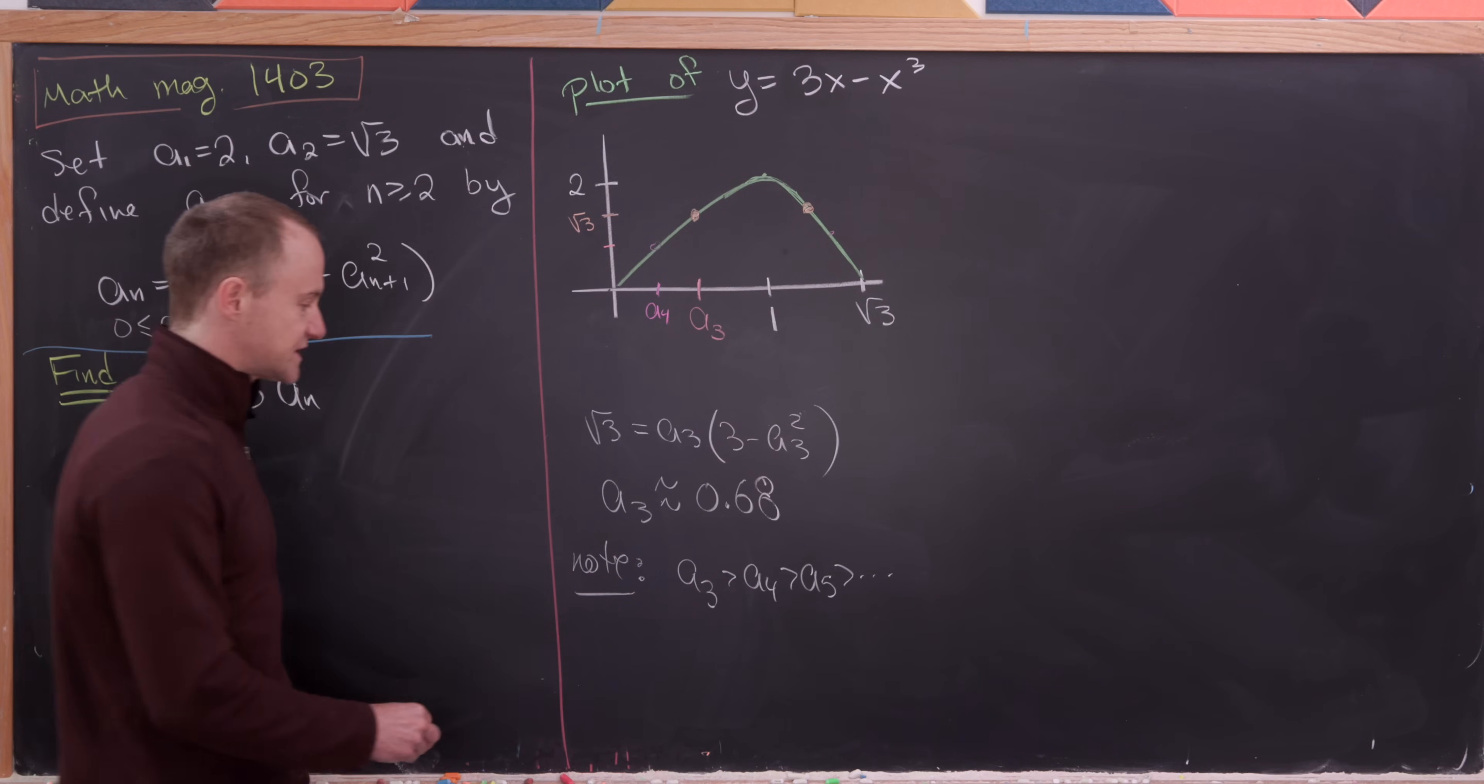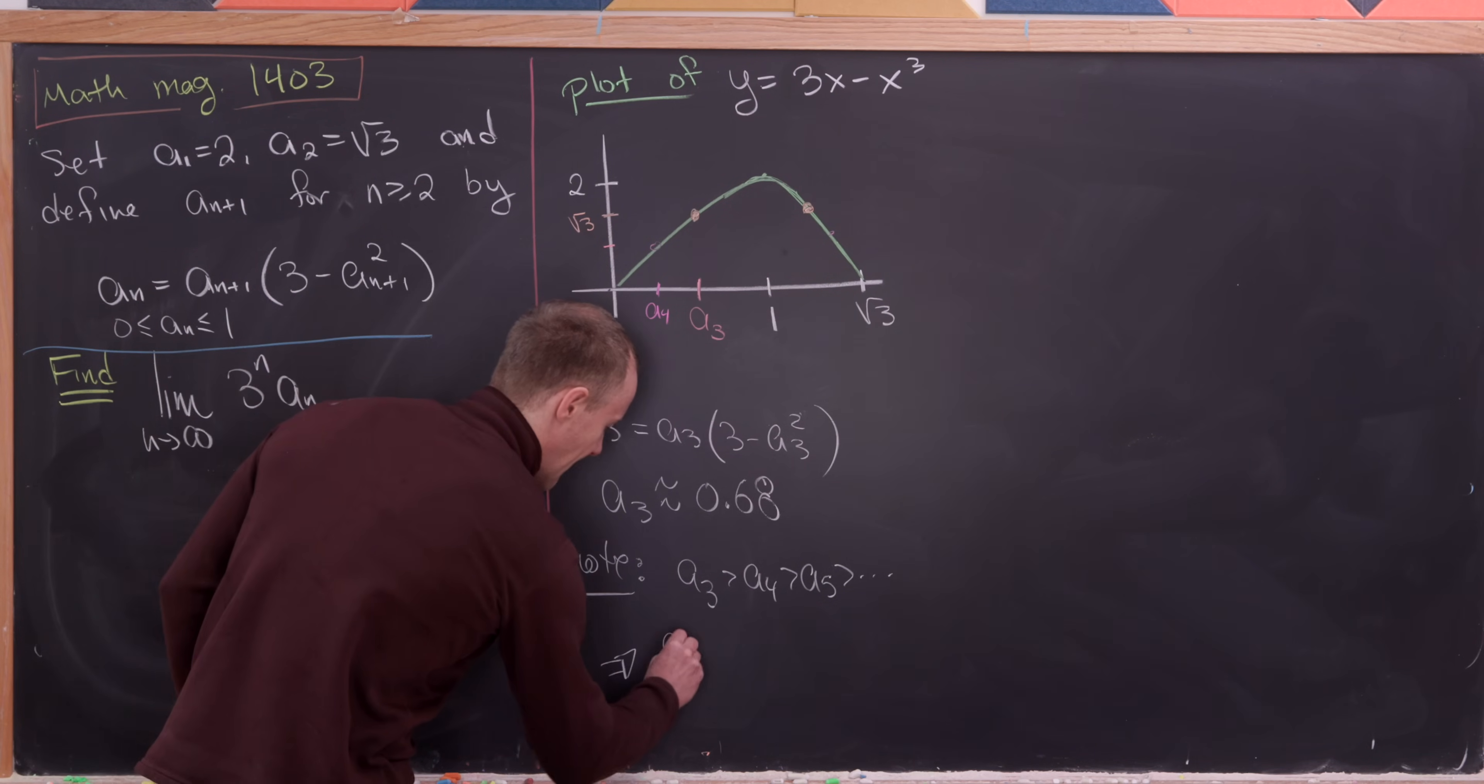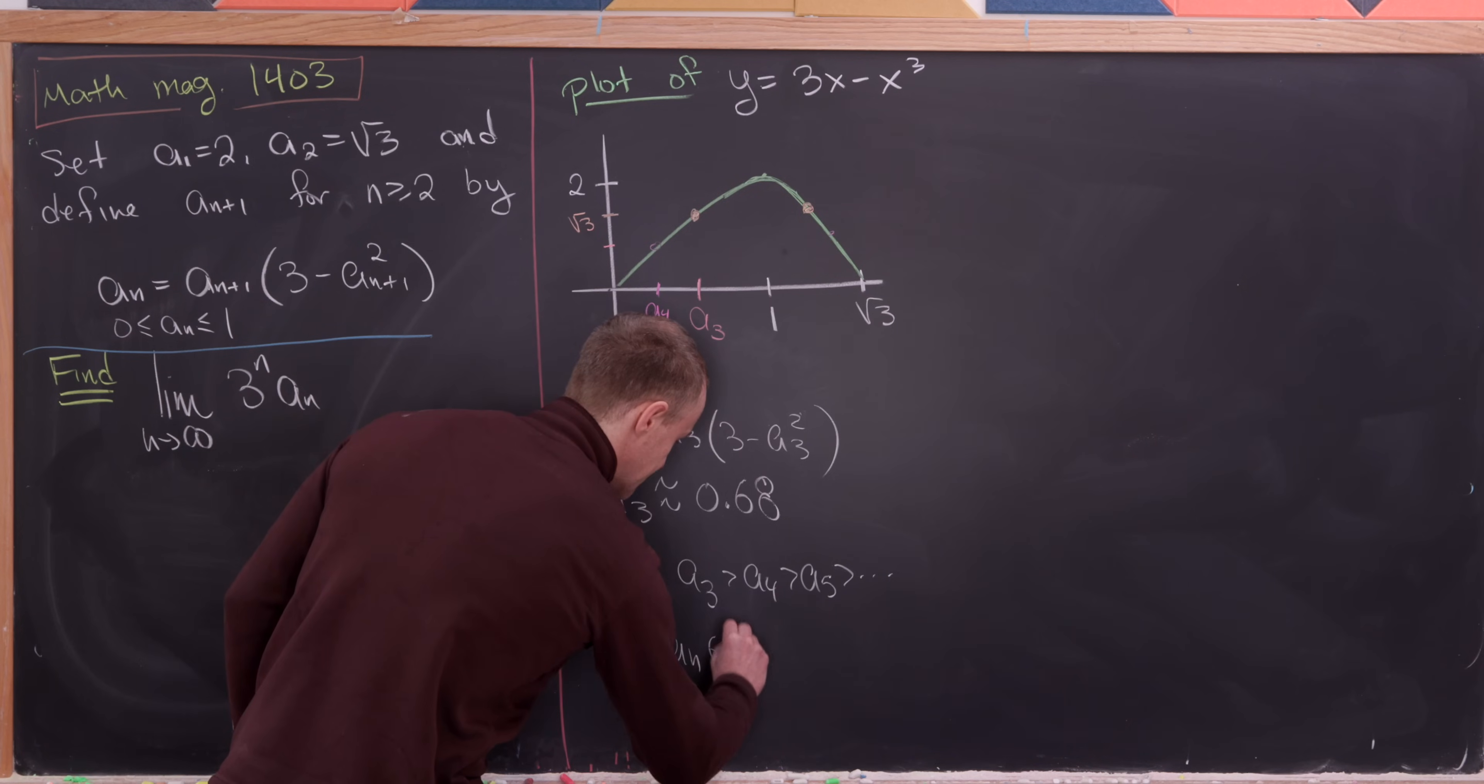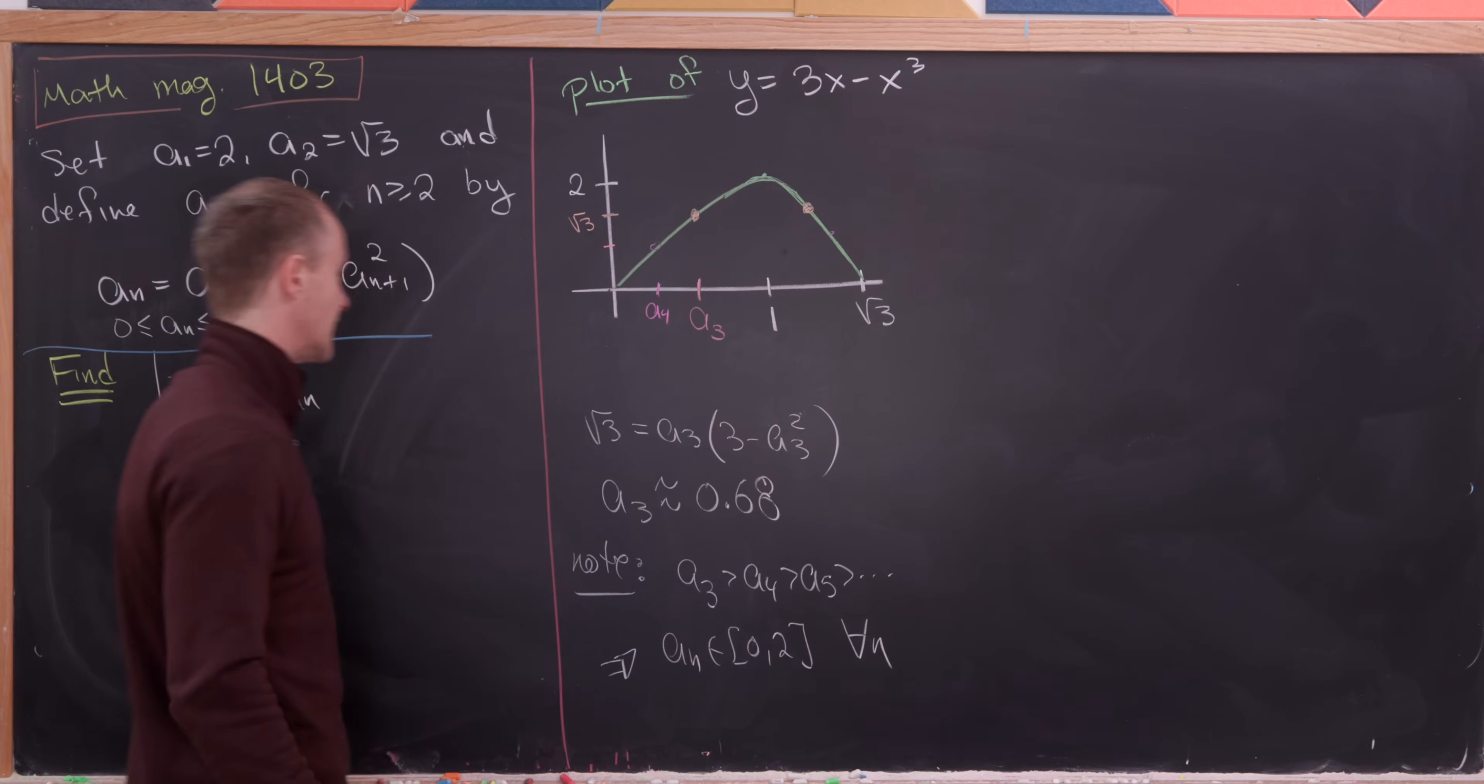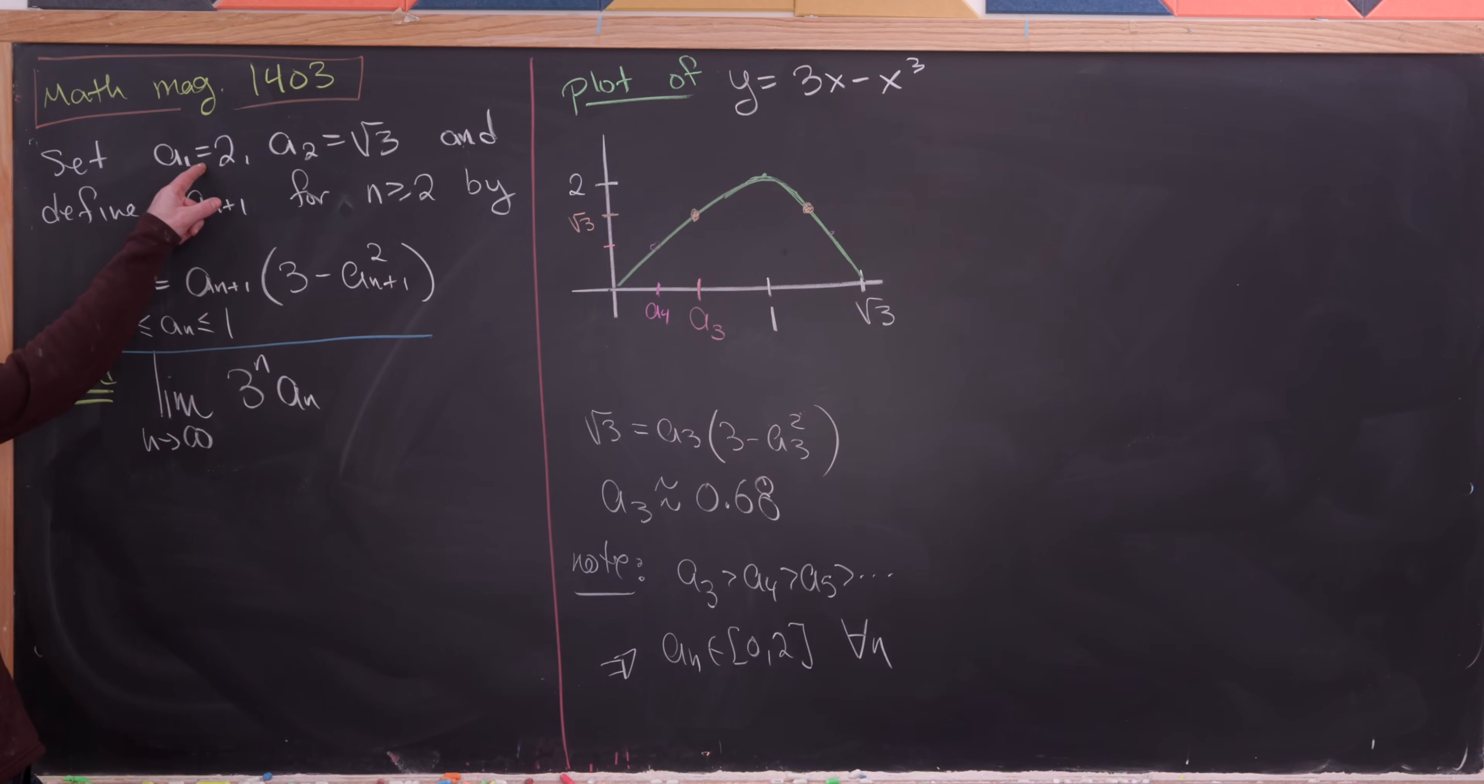So in particular, we've got the following condition. Notice that a sub n is inside of the interval from 0 to 2 for all values of n, because here it's equal to 2.